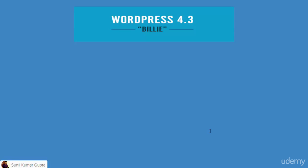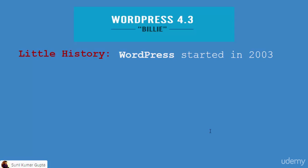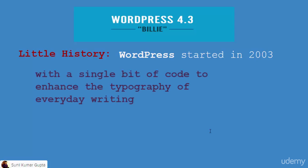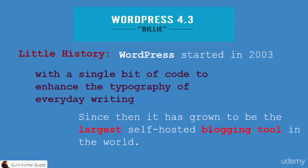We should know the history of WordPress. WordPress started in the year 2003 with a single bit of code to enhance the typography of everyday writing and publishing. It was aimed to simplify everyday writing and publishing on the web — writing blog posts or publishing your content. Since then it has grown to be the largest self-hosted blogging tool in the world.